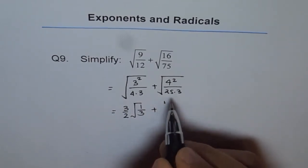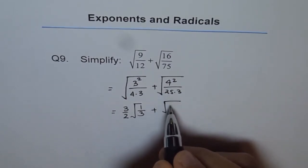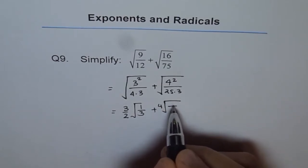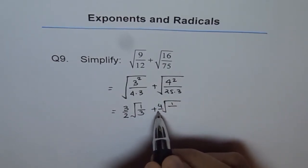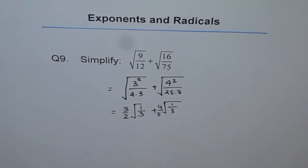So in the second term, we have 4 squared. So 4 squared, so 4 can be taken out, and 1 leaves. And for 25, I can write 5. 25 is 5 squared. So I get 4 over 5 square root of 1 over 3. You understand how I did it?